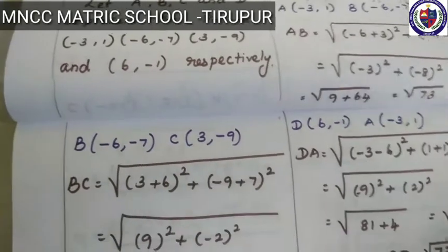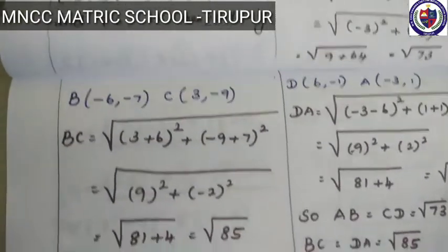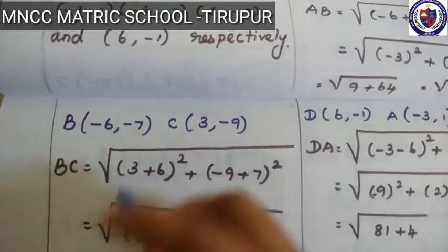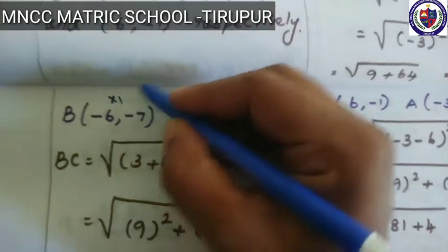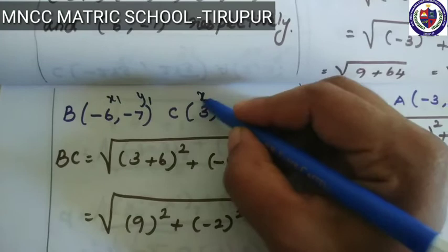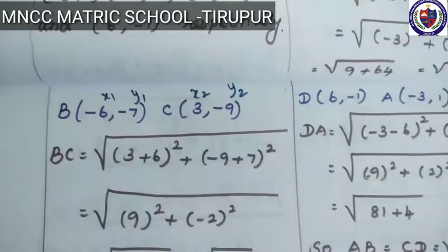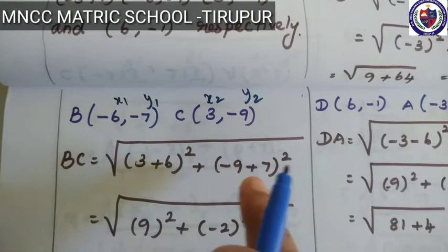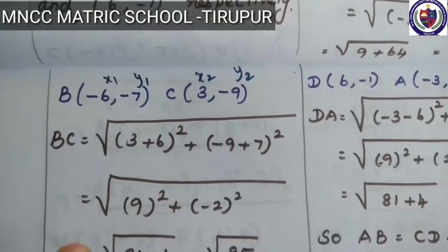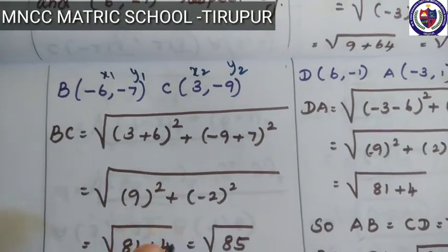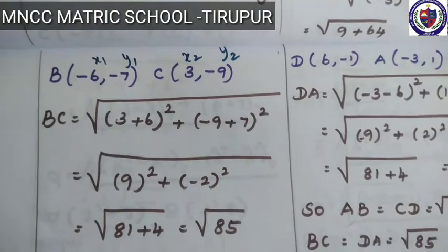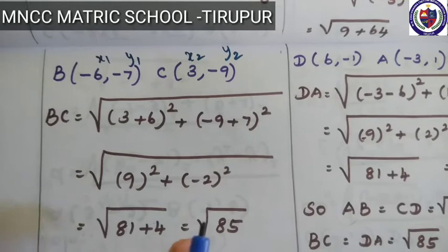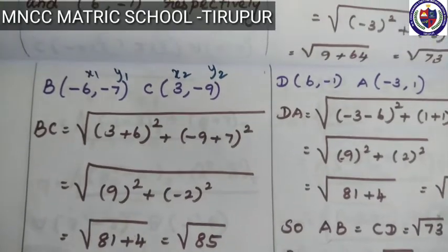Next, value of BC. Using the same distance formula with B(-6,-7) as x1,y1 and C(3,-9) as x2,y2. BC = √[(3+6)² + (-9+7)²] = √[9² + (-2)²] = √[81 + 4] = √85.